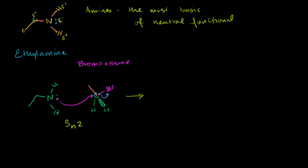After that's done, the bromine will have left, taking that electron. It already had six electrons, so now it'll have eight - a full octet. It gained electrons, so it now carries a negative charge.